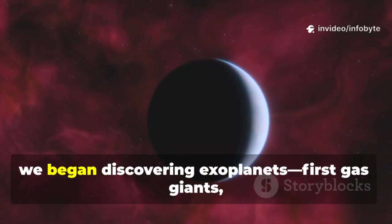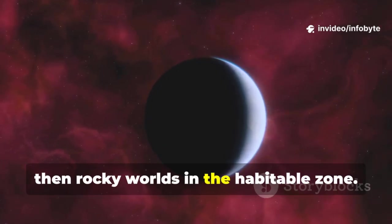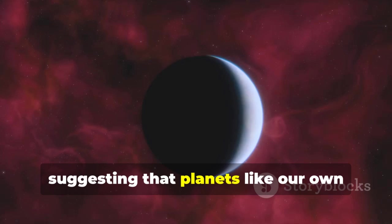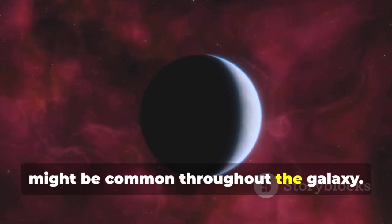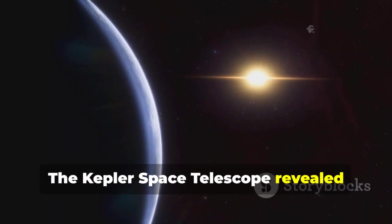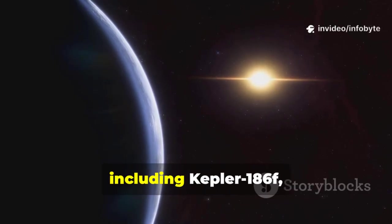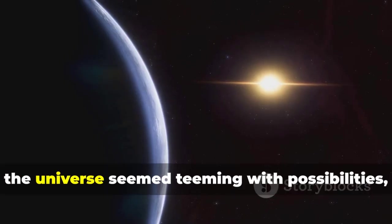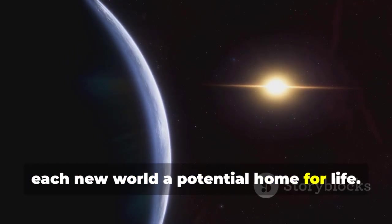In the 1990s we began discovering exoplanets, first gas giants, then rocky worlds in the habitable zone. Each new discovery brought hope, suggesting that planets like our own might be common throughout the galaxy. The Kepler space telescope revealed thousands of potential worlds including Kepler 186f, a planet strikingly similar to earth. Suddenly the universe seemed teeming with possibilities, each new world a potential home for life.